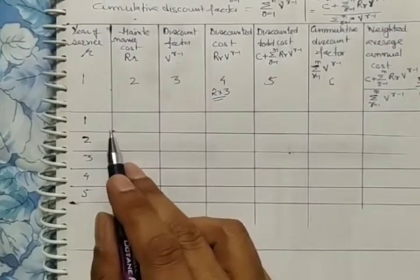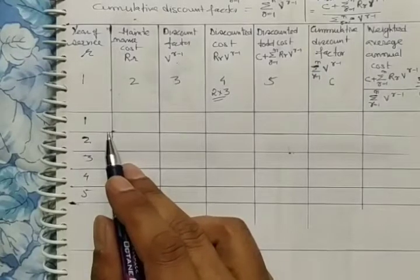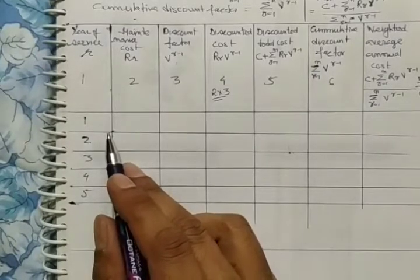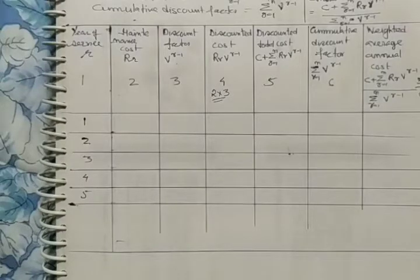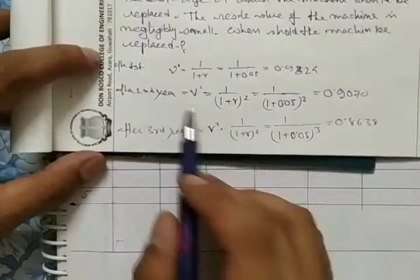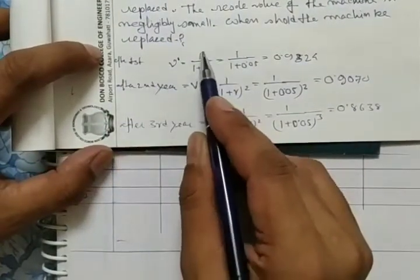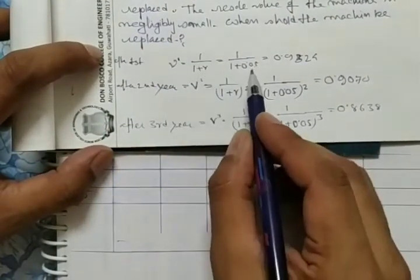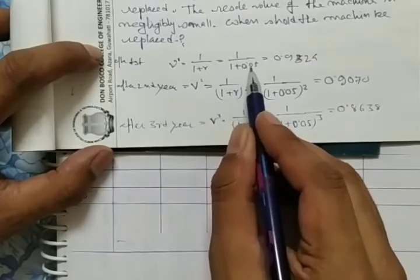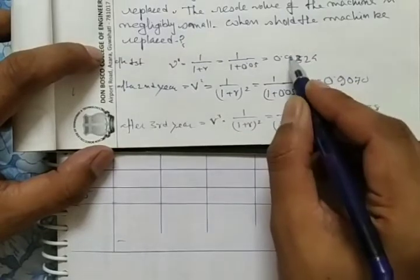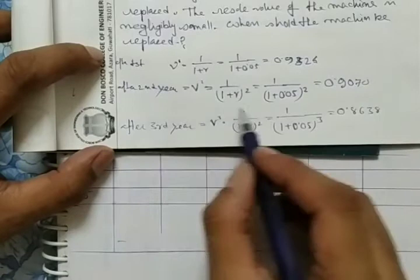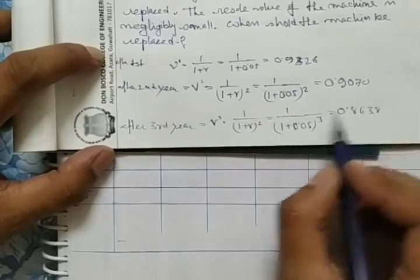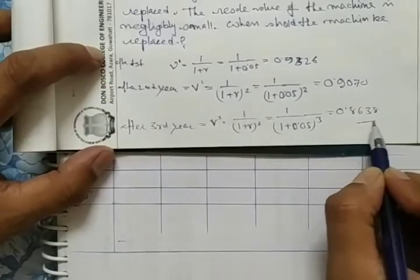One important factor to understand: the present worth values are calculated as 1 divided by (1 + 0.05)^n. After year 1: 0.9524. After year 2: 0.9070. After year 3: 0.8638. After year 4: 0.8227. These values follow this pattern.